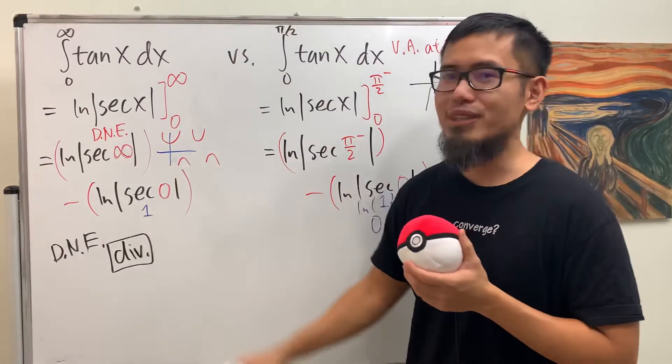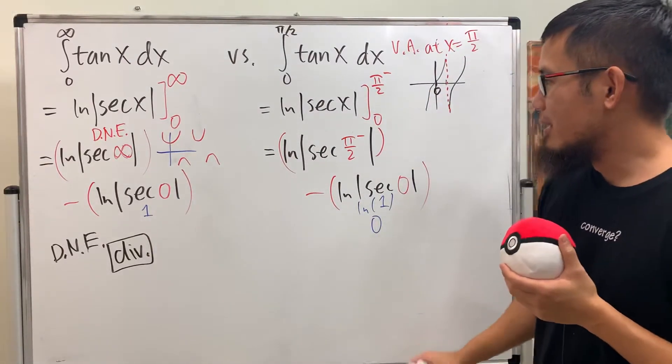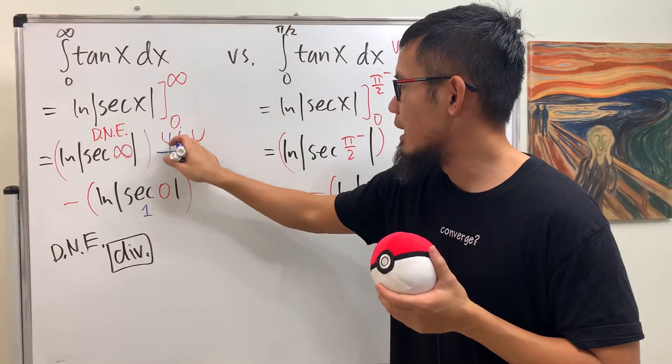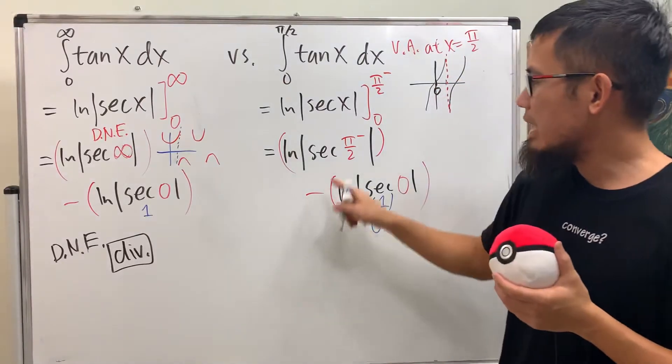what's secant of π over 2 from the left-hand side? We're going to look at the picture again. The thing about secant and tangent is that they both have vertical asymptotes at π over 2 right here. And if you go,